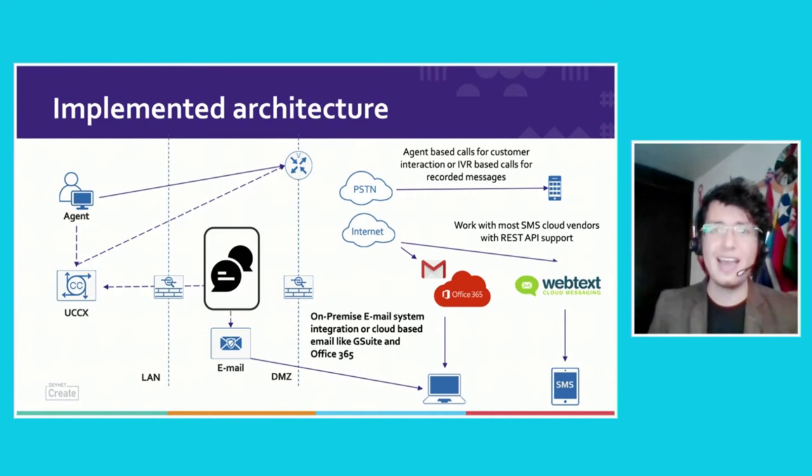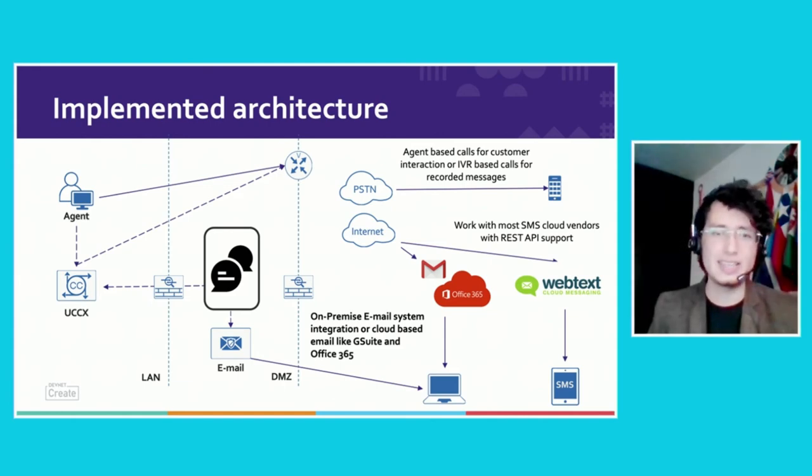The connection to the Cisco UCCX and UCCE deployments was made through their powerful API service, making it very easy to deploy these connections. We deployed different queues for different levels of dunning based on business needs and personas — queues for robocall and queues for live calling. The queues were already deployed, and we simply injected the people who needed to be contacted through these APIs.